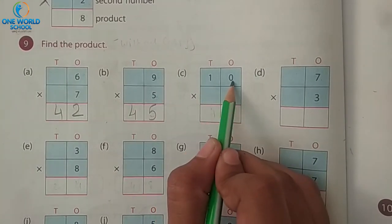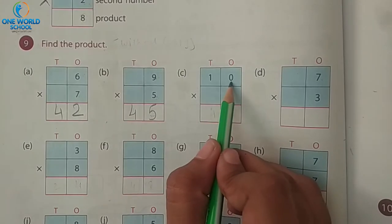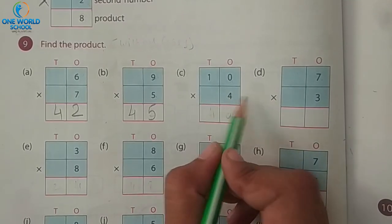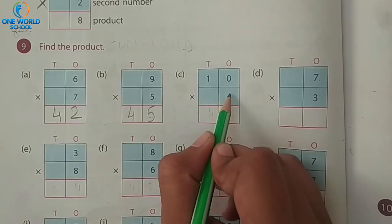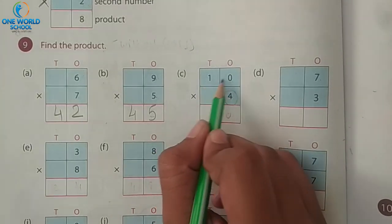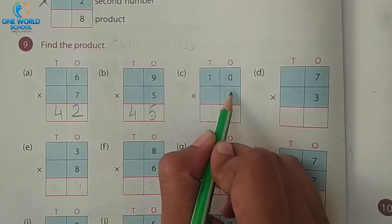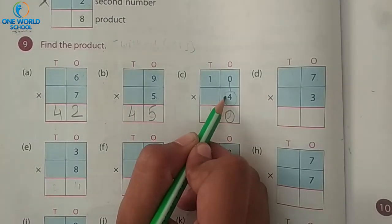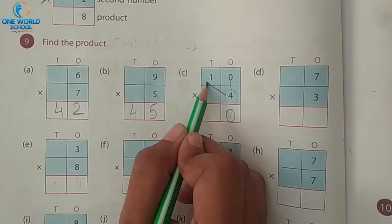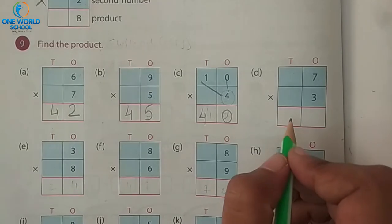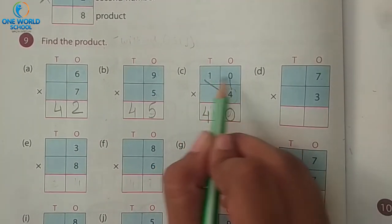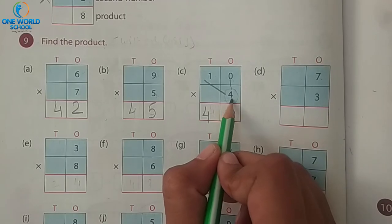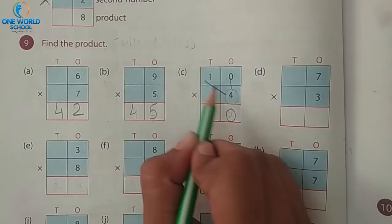Look here — your first number has two digits, at the ones place and the tens place. So from where we have to start? From the place of ones. Here only one digit is there as the multiplier. So first we multiply with ones: four zeros are zero. And now we will multiply it with tens: four ones are four.